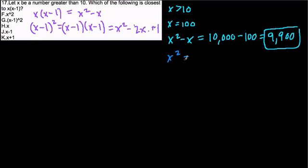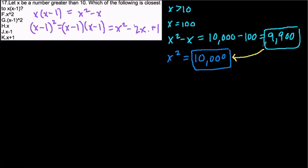Choice F is x squared, which equals 10,000. That's 100 away from 9,900 — which is also what x equals. So the distance between choice F and the original value is 100, which equals x.